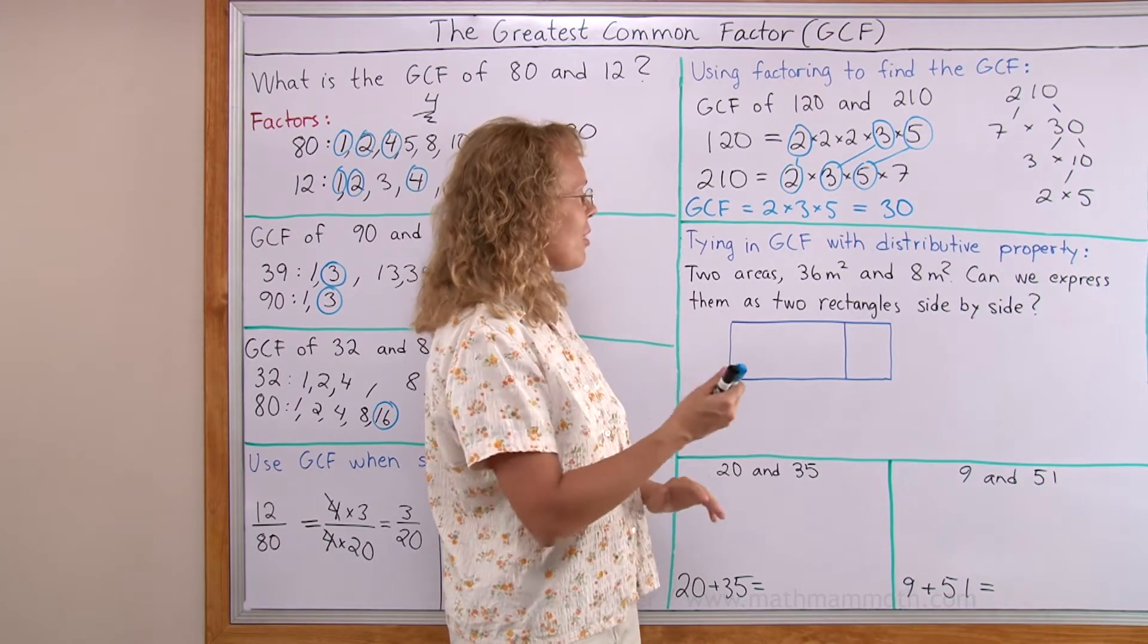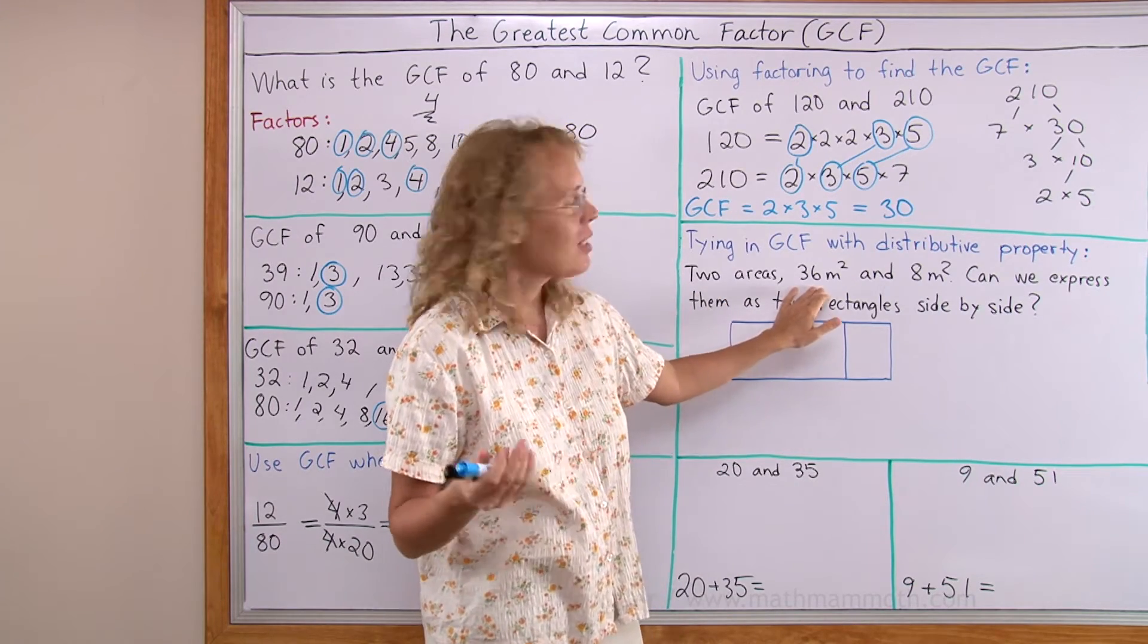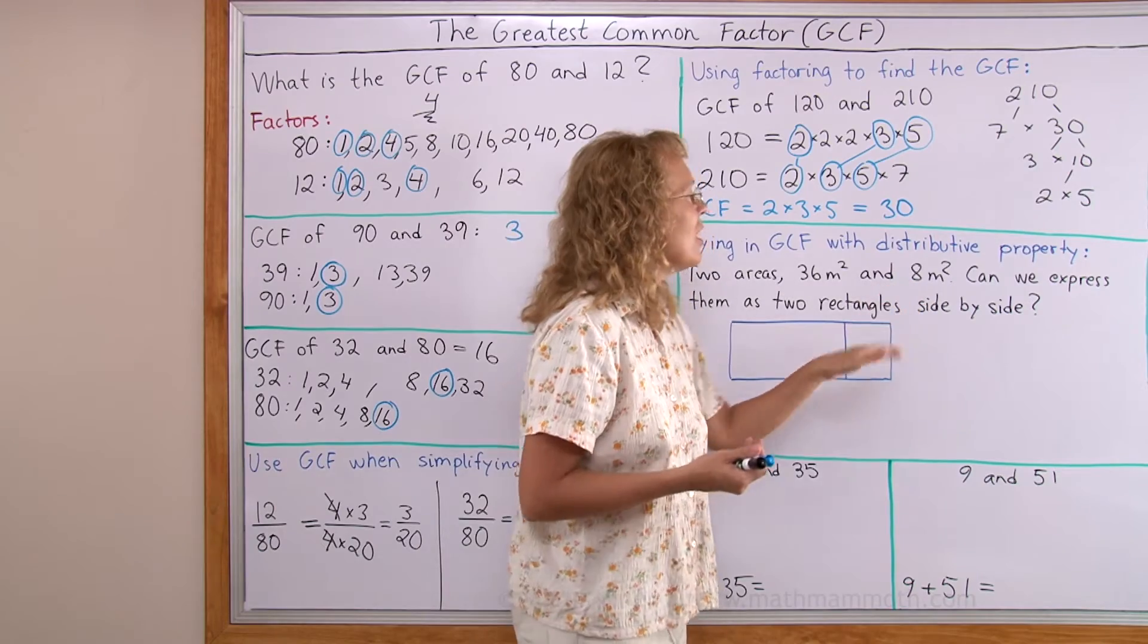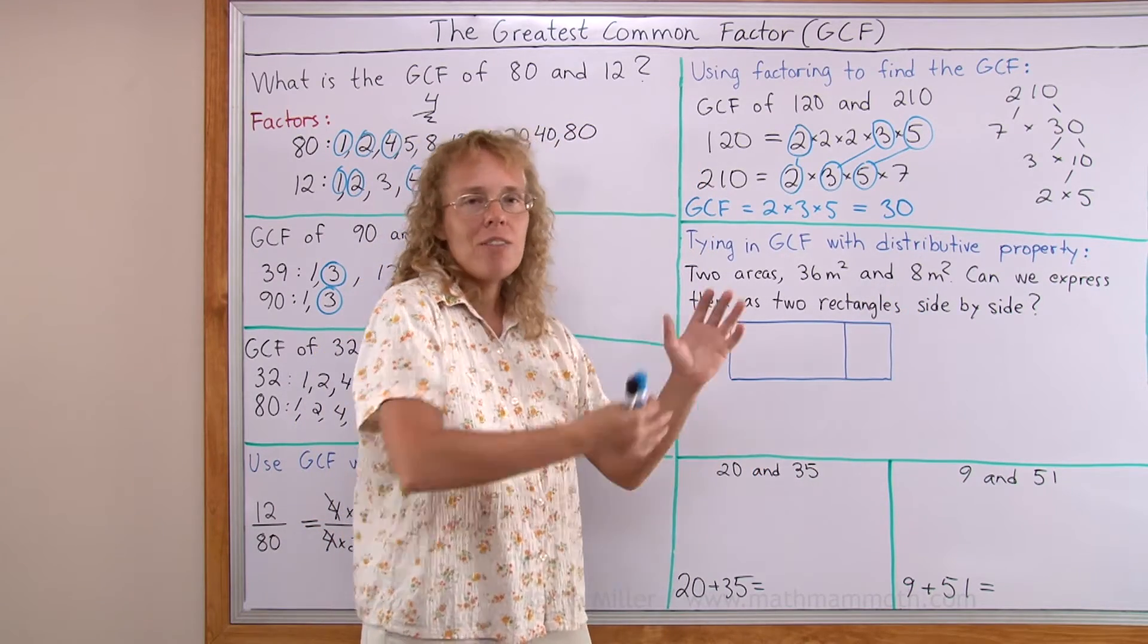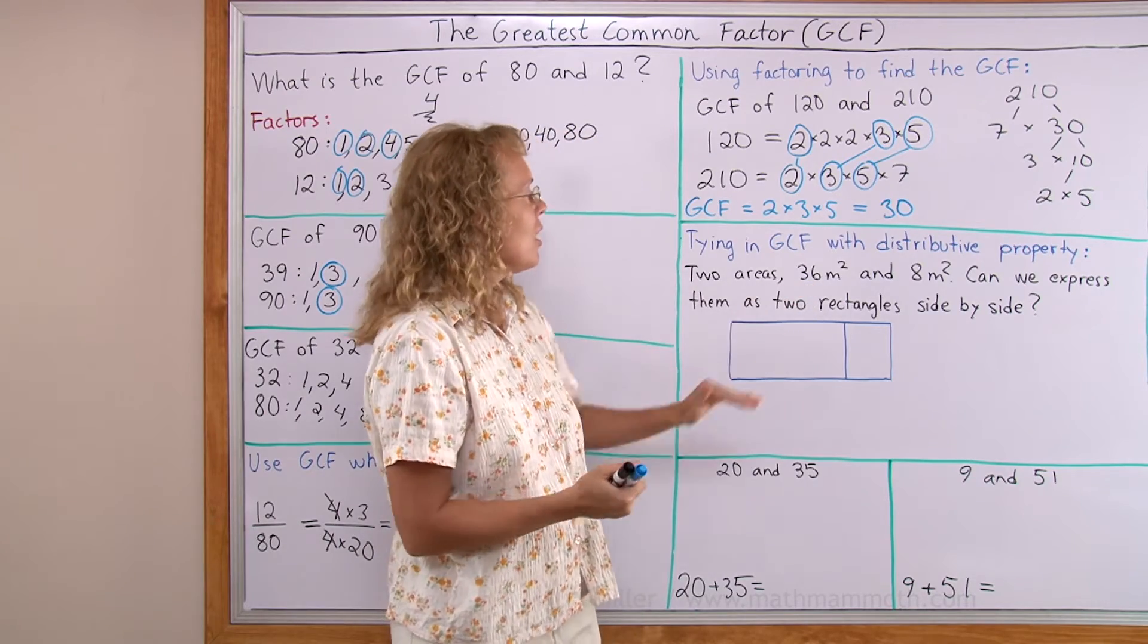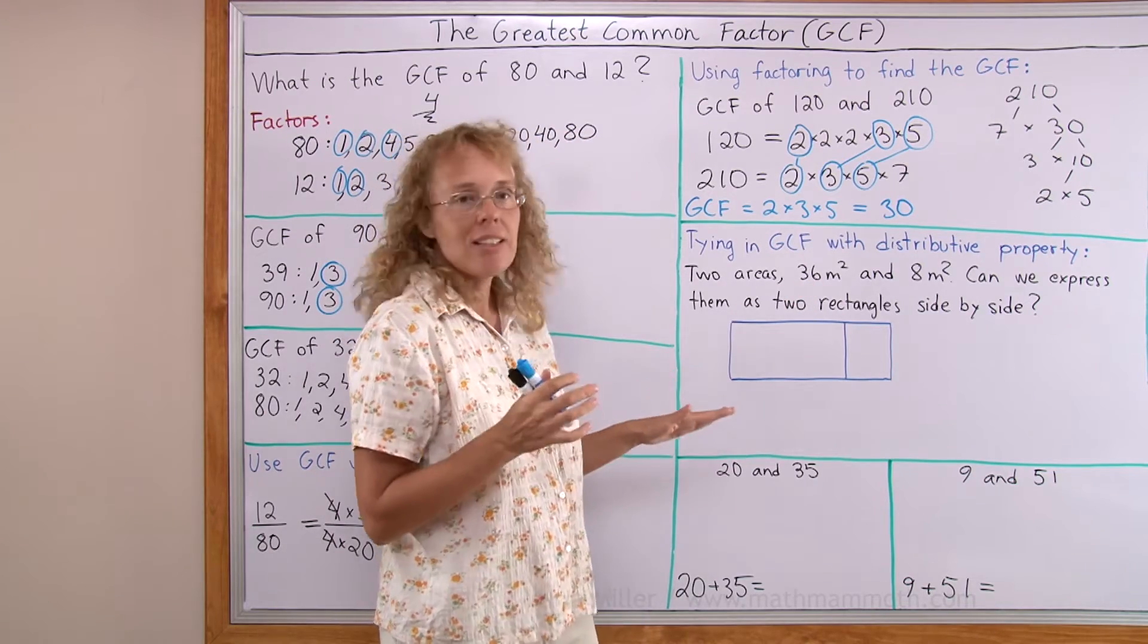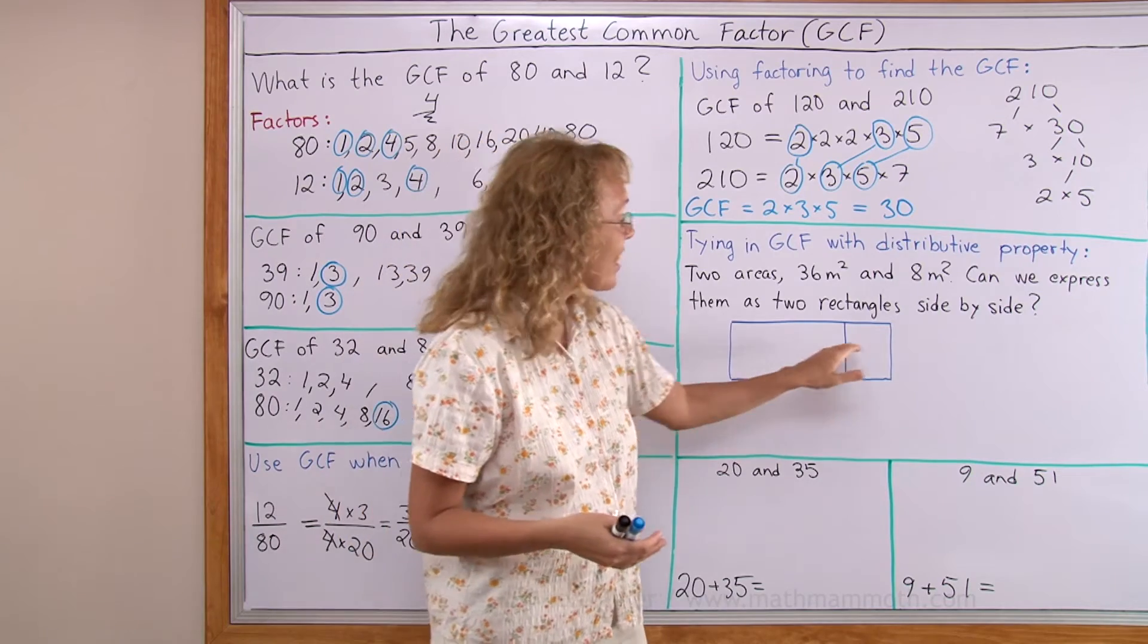We have 2 areas, one of them is 36 square meters, the other is 8 square meters. The question is, can we express those 2 areas? We don't even know what shape those areas are, just that's so much. Can we express them as 2 rectangles side by side, like this?